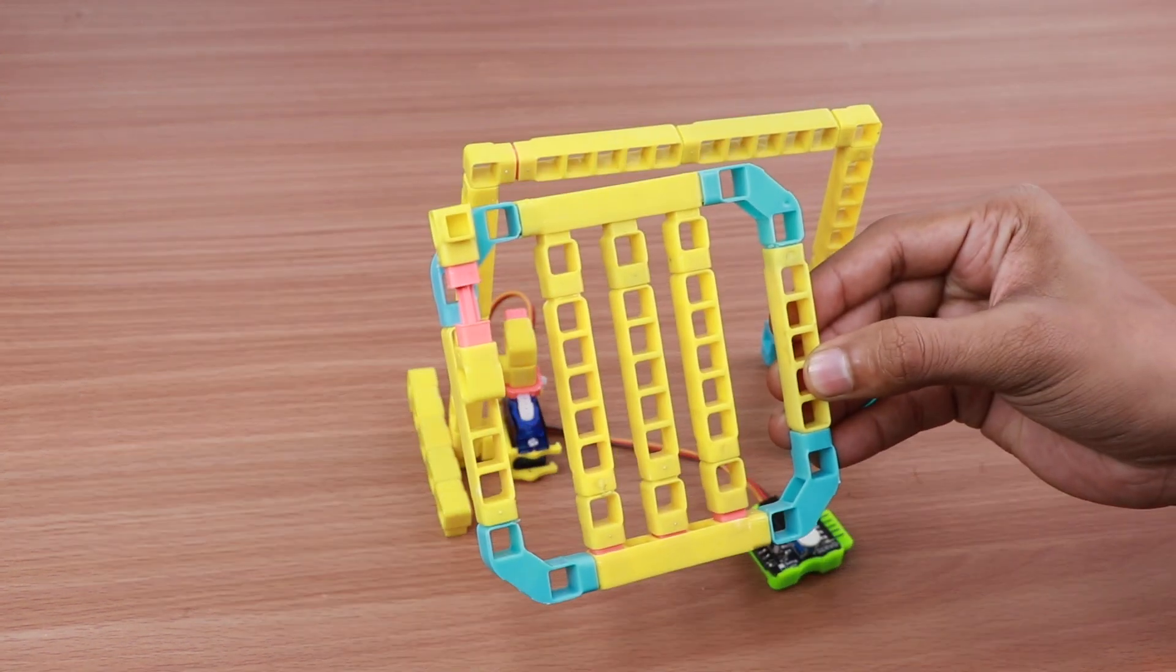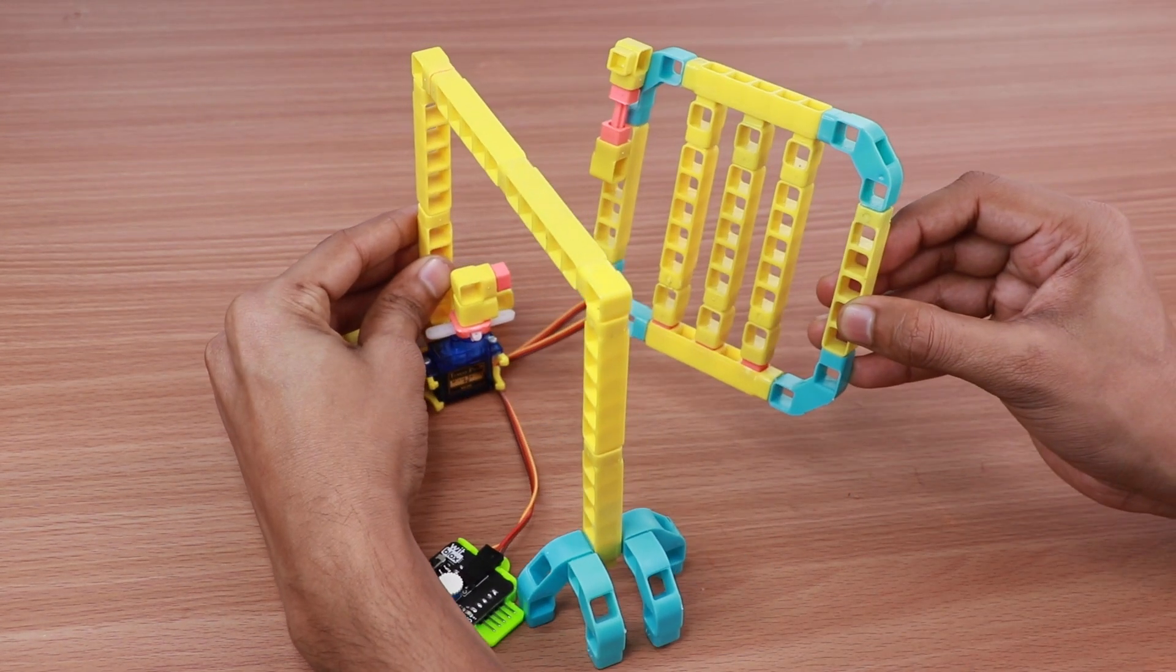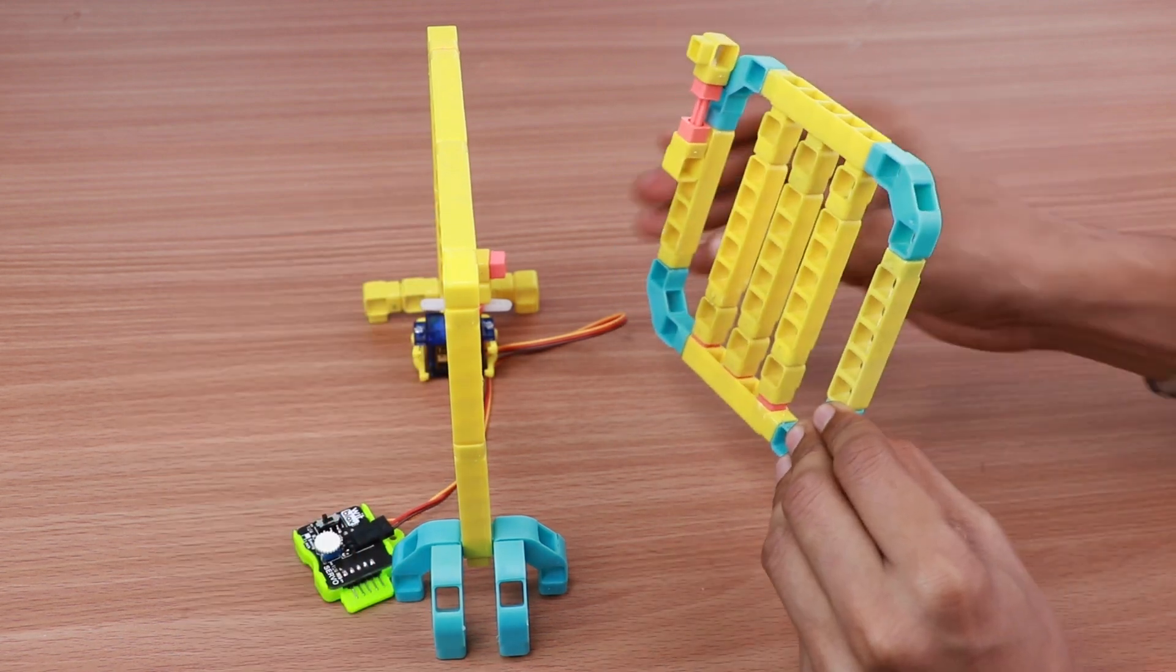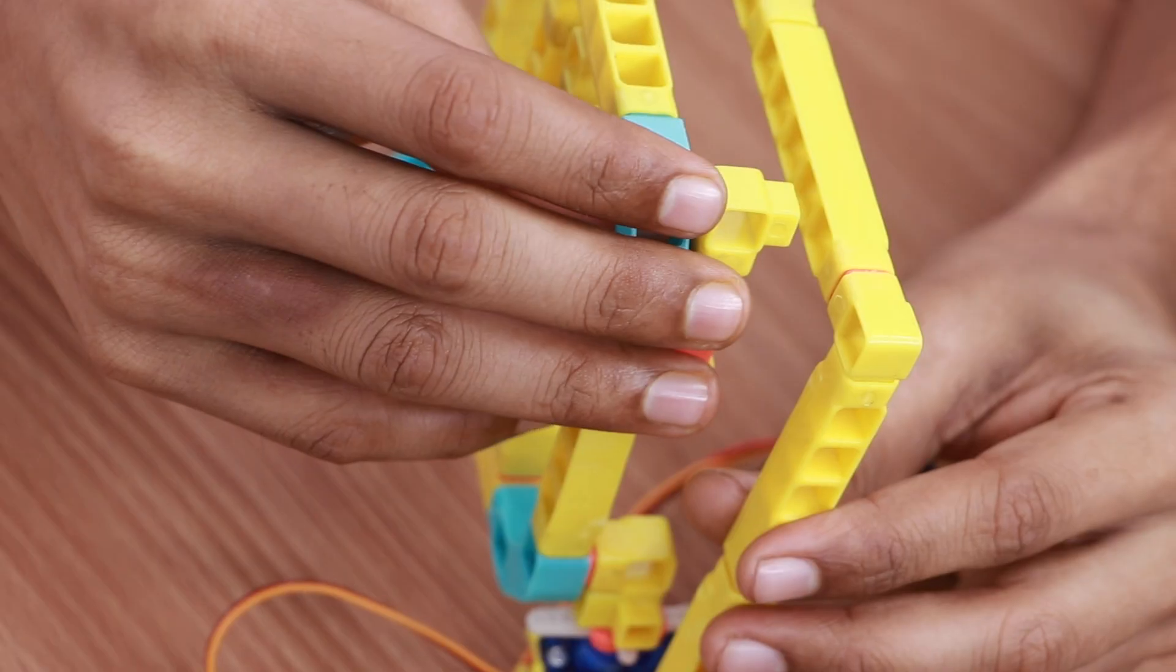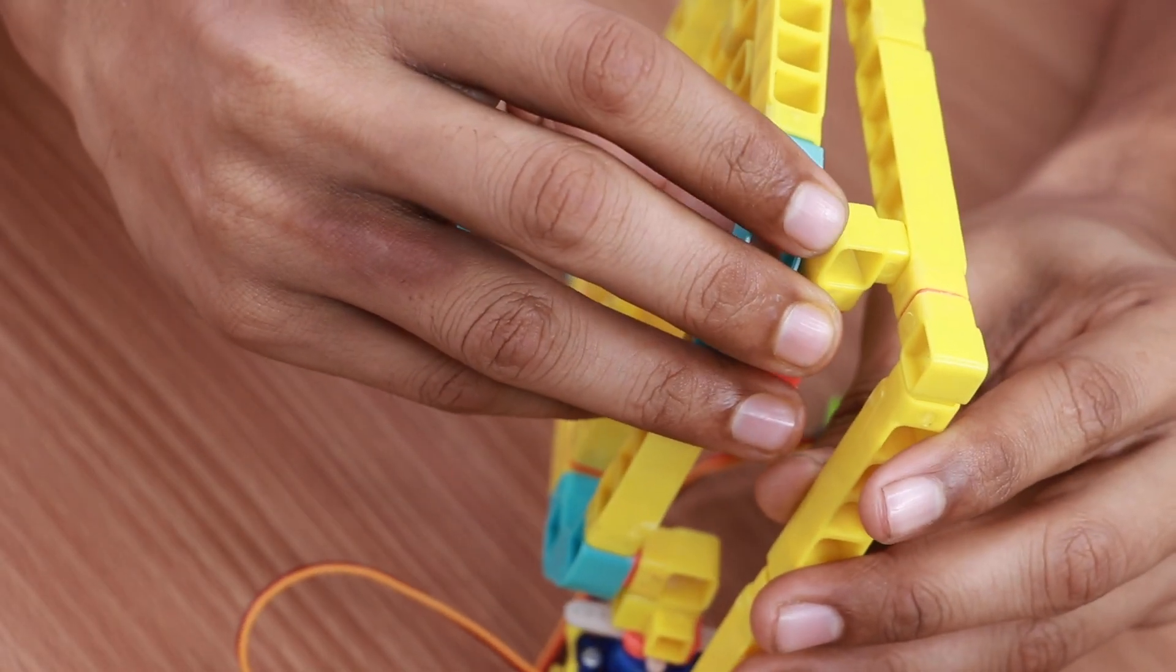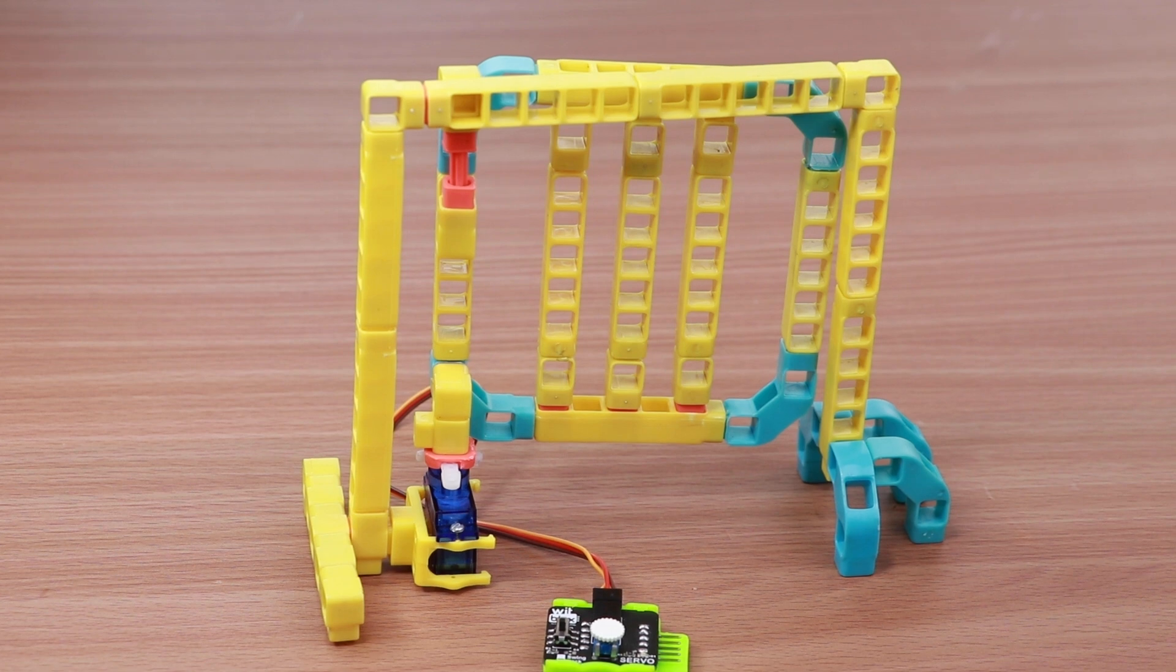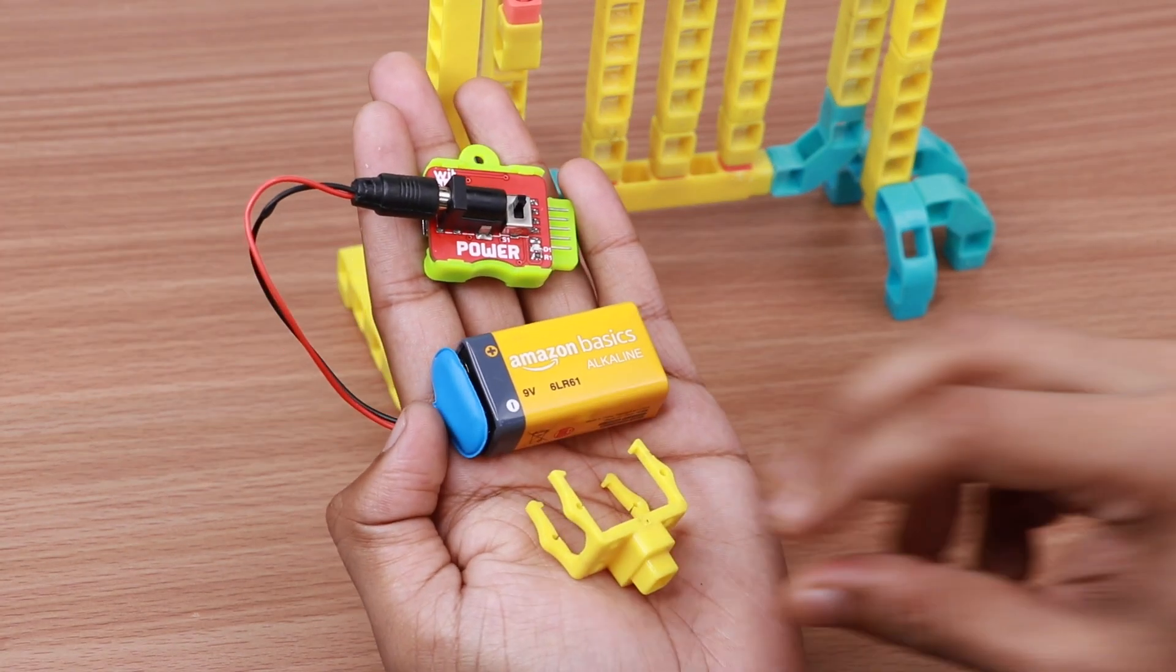Now connect the gate to the frame via the one-hole elbows. Attach the battery to the battery holder and connect it to the frame.